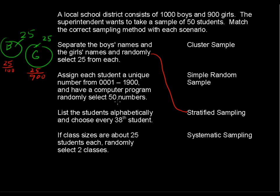Have a computer program randomly select 50 numbers. Alright, so that's good. We've got all these students here, all 1,900, and the computer is just going to pick out 50 of these. And so this is simple random sample.